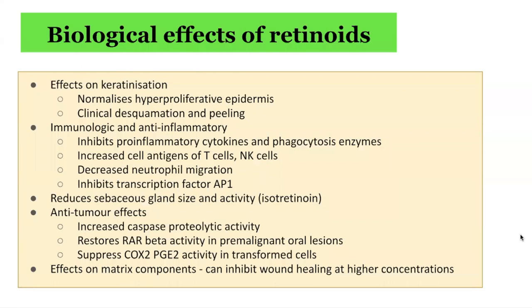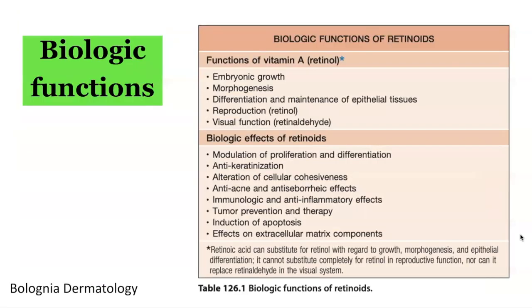The biological effects of retinoids are significant. On keratinization: normalizing hyperproliferative epidermis and causing clinical desquamation and peeling. On the immune system: anti-inflammatory effect by inhibiting pro-inflammatory cytokines and phagocytic enzymes, increasing cell antigens of T-cells and natural killer cells, decreasing neutrophil migration, and inhibiting transcription factor AP-1. Retinoids can also reduce sebaceous gland size and activity — specific to isotretinoin. Anti-tumor effects occur via increased caspase proteolytic activity and suppression of COX-2 and PGE2 activity in transformed cells, important in pre-malignant states. Retinoids can also inhibit wound healing at higher concentrations.